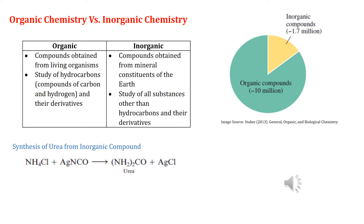During the latter part of the 18th century and the early part of the 19th century, people categorized compounds as organic and inorganic. Their notion was that compounds obtained from living organisms were organic and compounds obtained from mineral constituents of the earth were inorganic. These people believed that organic compounds can never be created in the laboratory — only a mysterious, God-given power in humans can do this.